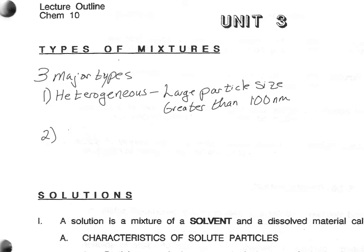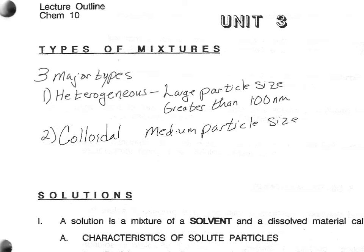The second and third types are both homogeneous according to our previous rules, but the second one is a colloidal mixture. It is of medium-sized particles — that means the particle sizes are between 1 and 100 nanometers in size.